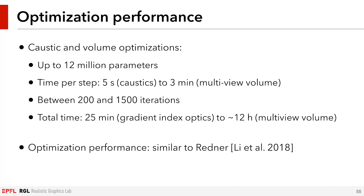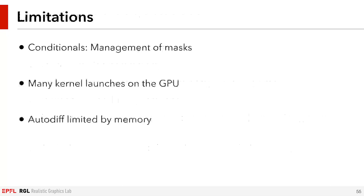The optimization performance is similar to Redner, despite Redner using handwritten derivative code. Mitsuba 2 uses automatic differentiation, which makes it much more flexible. While we believe that Mitsuba 2 is going to be very useful for a lot of different applications, there are a few limitations. Having to convert if statements to masks can be challenging for new developers. Further, our JIT compilation approach does not result in the fastest possible GPU renderer due to the large number of kernel launches. State-of-the-art GPU renderers often use a so-called mega-kernel approach where more computation is grouped into a single GPU kernel. Finally, when using automatic differentiation, we are often limited by the available memory on the GPU.